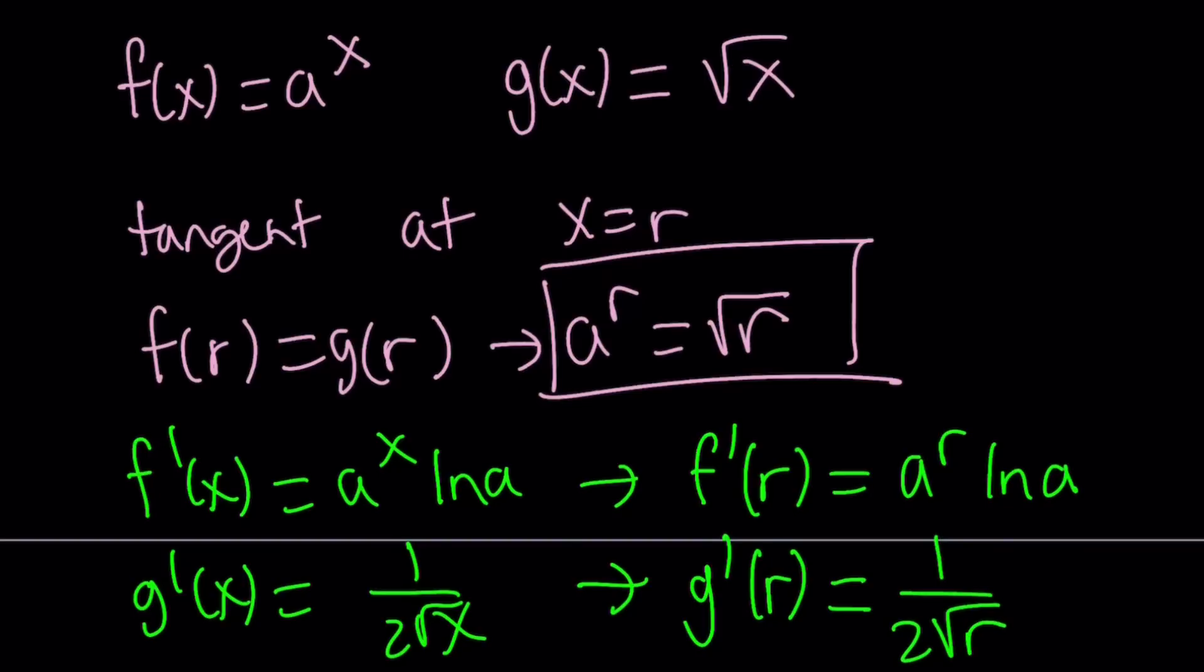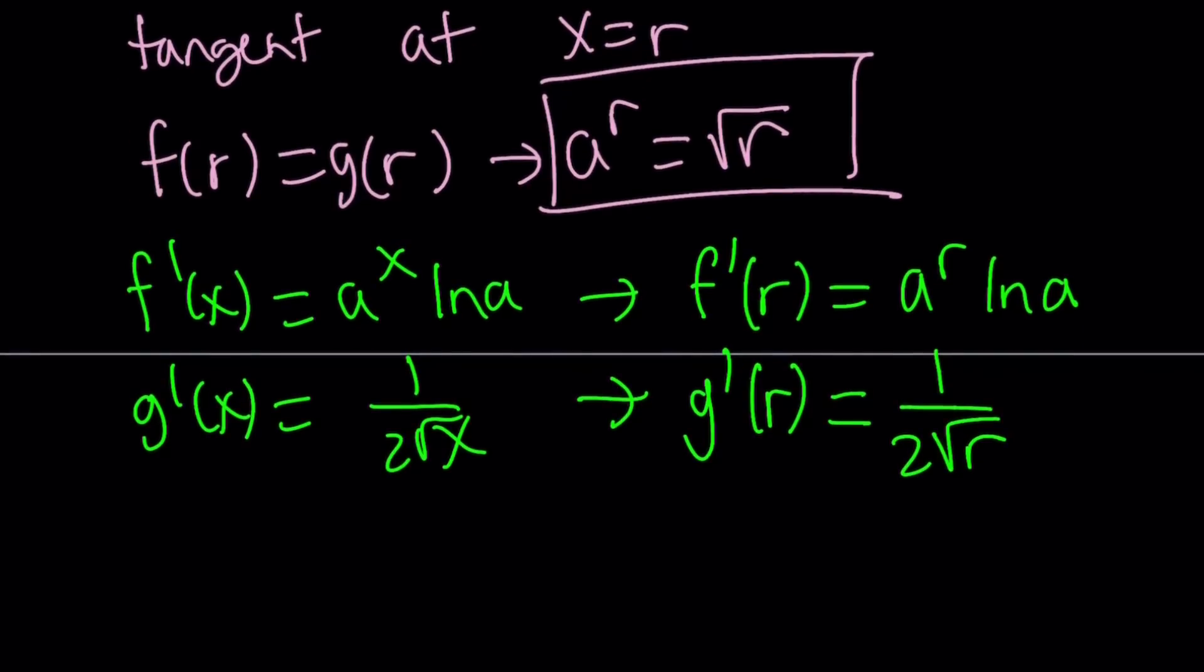Okay, so we have two functions that are tangent. So that means they're going to have a common tangent. So the derivatives at x equals r should also be equal, because that's going to give you the slope of the tangent at that point. They have a common tangent. So a to the power r ln a equals 1 over 2 times the square root of r.